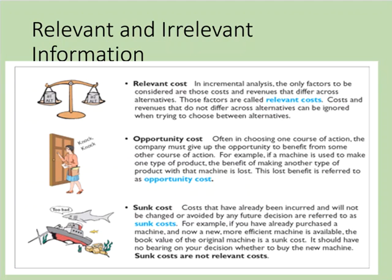Irrelevant costs do not differ between alternatives. An example is a sunk cost — these are costs that have been incurred in the past and cannot be changed regardless of what future action we take. So when deciding whether or not to keep our old car or buy a new one, the purchase price of the old car is irrelevant. It is a sunk cost: it's already been incurred and there's nothing we can do to change that.